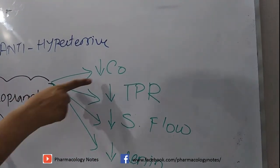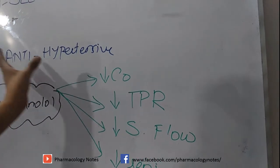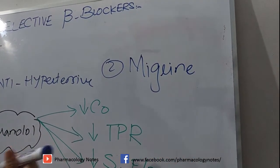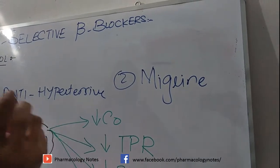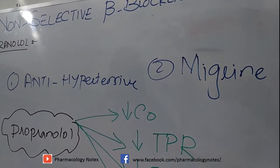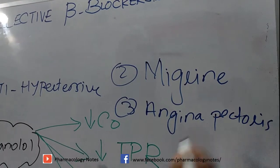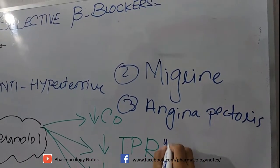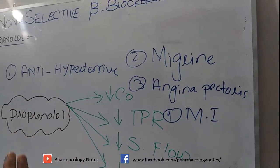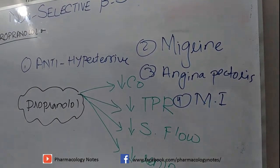Propranolol is also used in the case of migraine: when vasodilation occurs it increases intracranial pressure, and propranolol counteracts this by causing vasoconstriction. It is used in angina pectoris and in myocardial infarction, because catecholamines increase oxygen demand, while propranolol diminishes oxygen demand by the heart, making it beneficial in myocardial infarction.